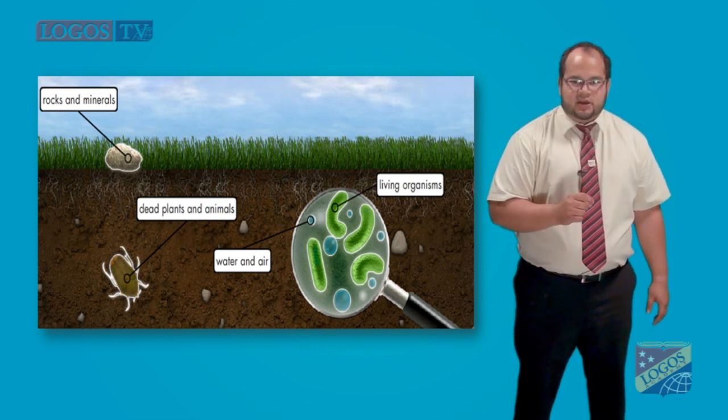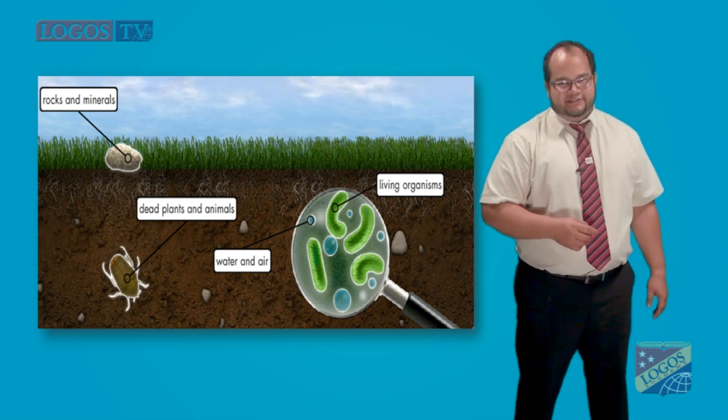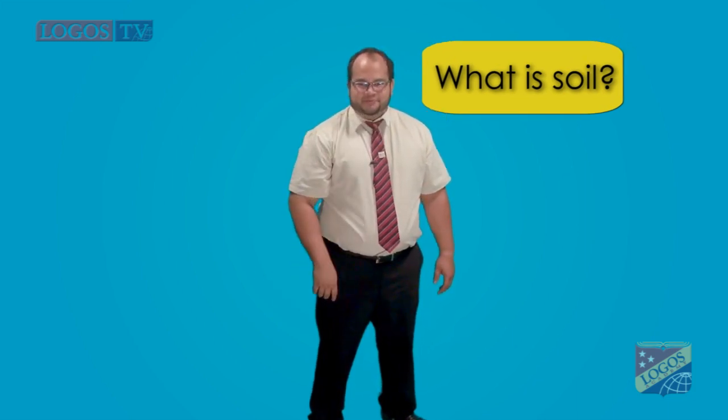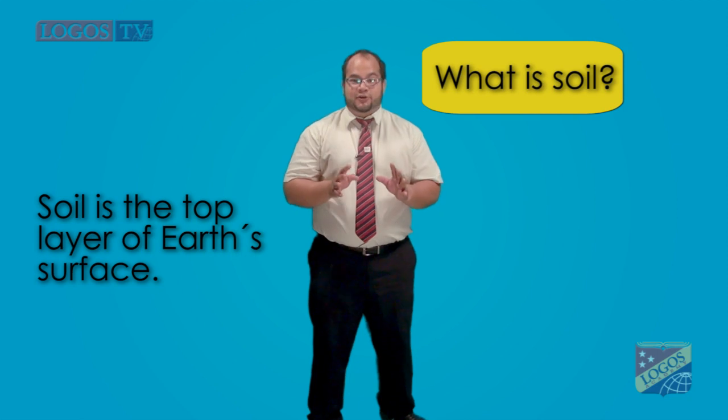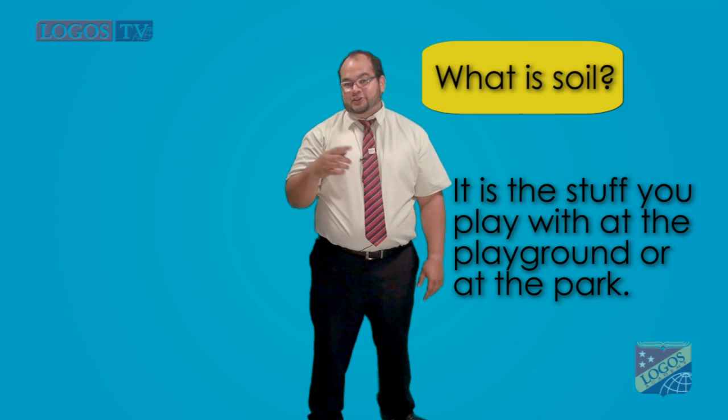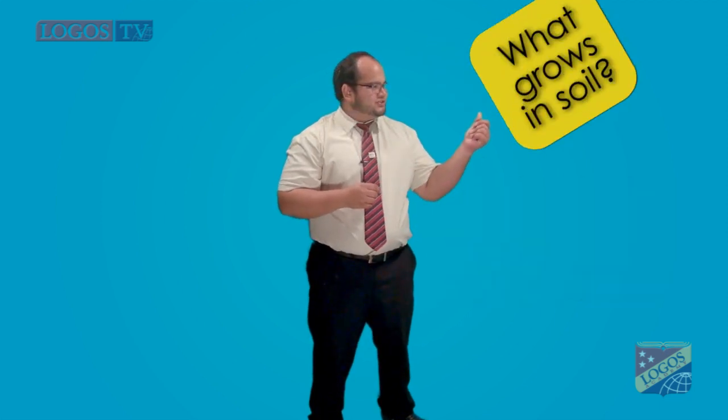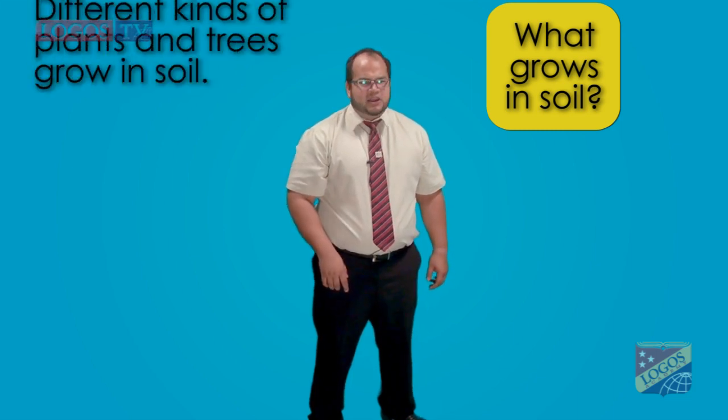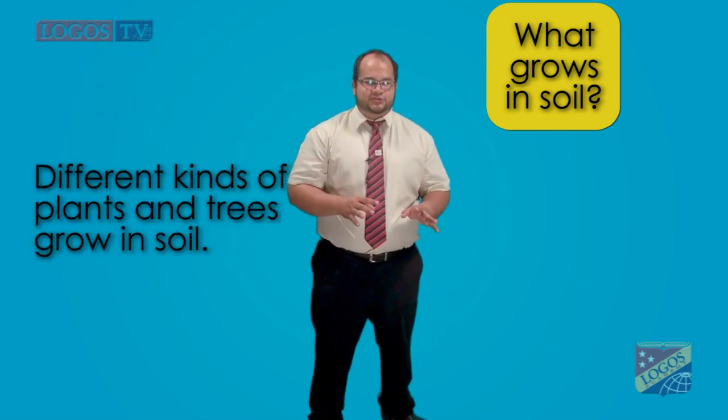so important for us with some questions. Are you ready? Let's begin with question number one: What is soil? Soil is the top layer of Earth's surface. It is the stuff you play with at the playground or at the park. Question number two: What grows in soil? Different kinds of plants and trees grow in soil.